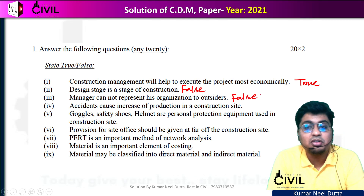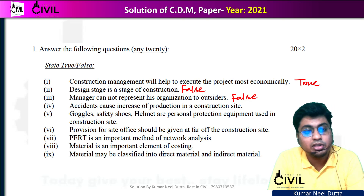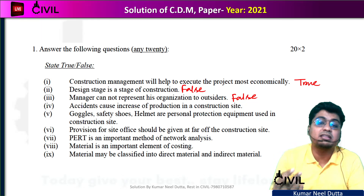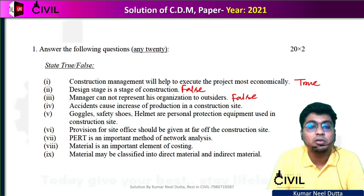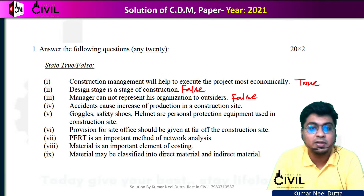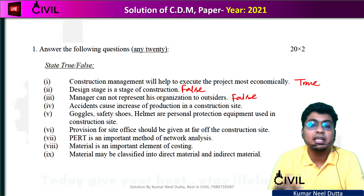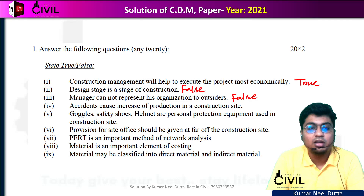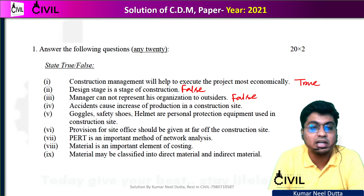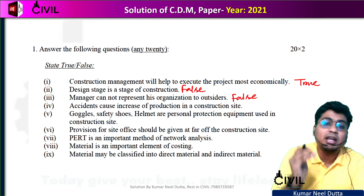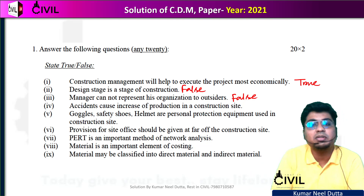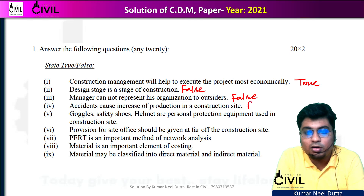Next, we discussed number 4, which we also covered in 2020. The statement says accidents cause an increase in production at construction sites. Accidents cause a police case, a stay order, and an investigation. If there is an accident, you would have to shut down the whole production site, so it will decrease production. So if it says increase, it will also be false.